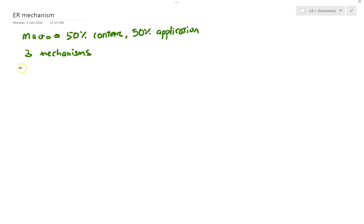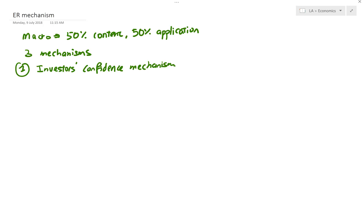The first mechanism is the investors' confidence mechanism. It is almost impossible for a student to go through a macroeconomics exam paper without mentioning investors' confidence, because investment is a very important component that links AD, AS, SRAS, and all the various aims and problems together. I have a video on that, so you can check it out.